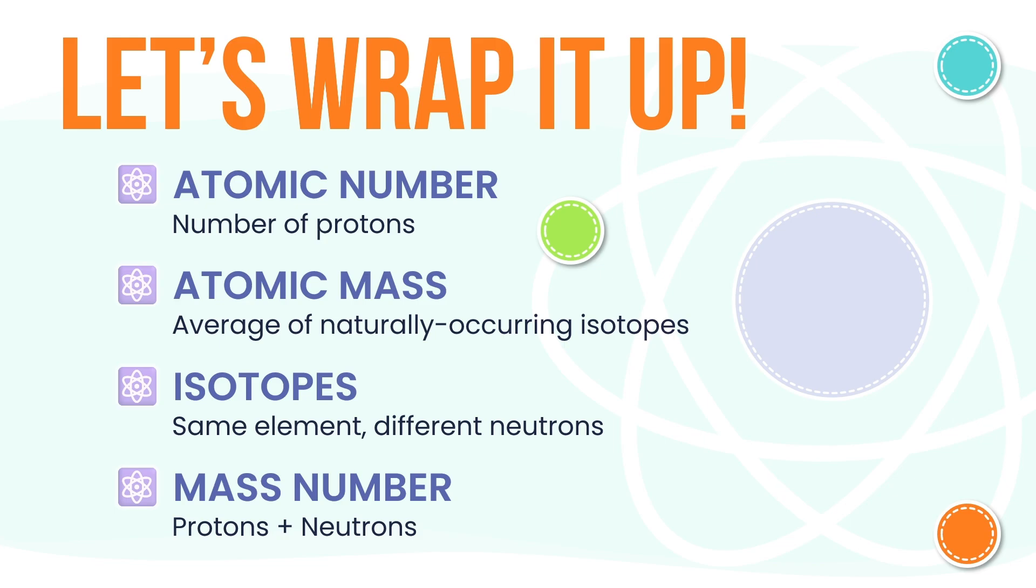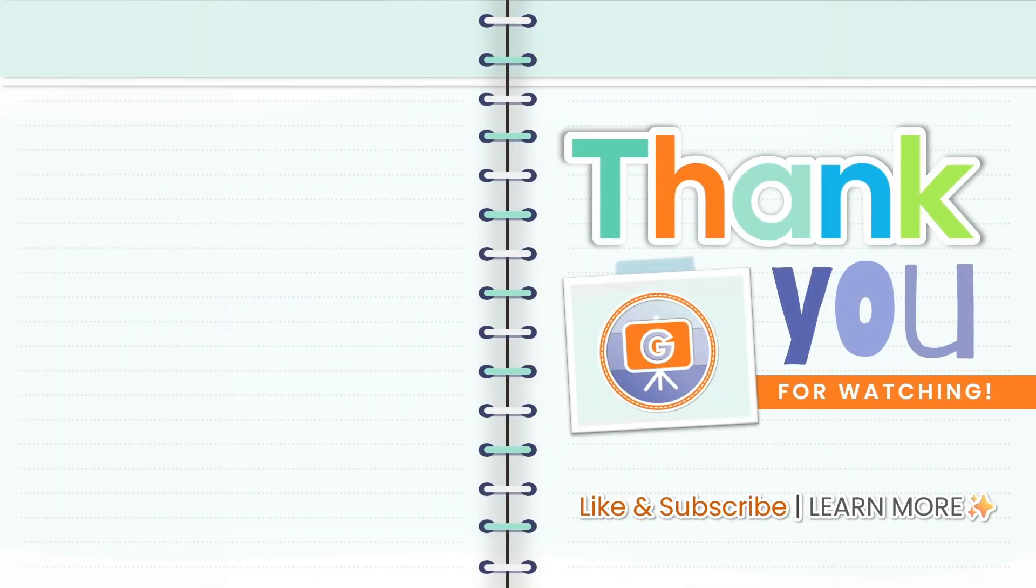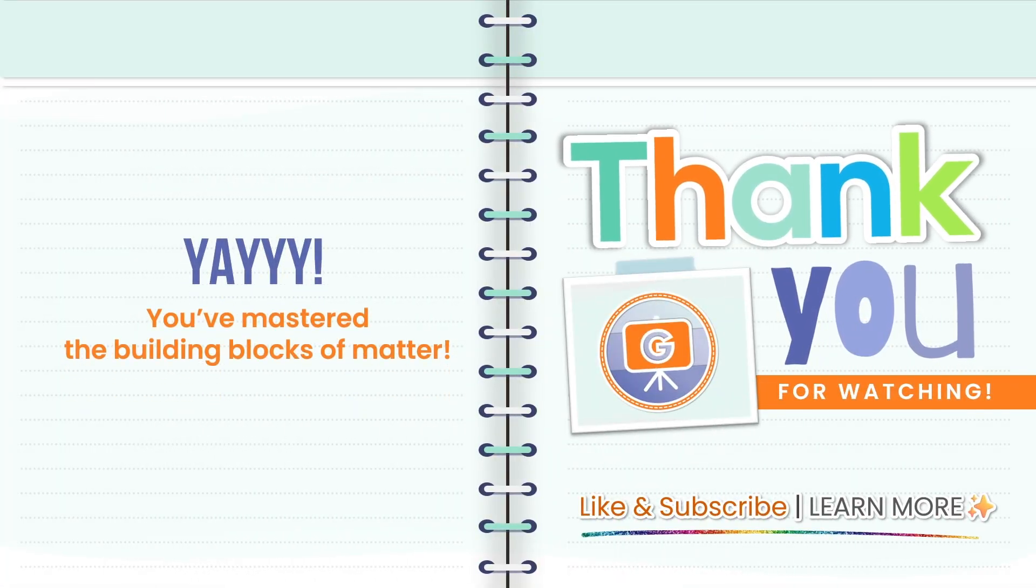And that's it. You've just wrapped up a huge part of the chemistry journey. From element tiles to isotopes, you've learned how to read the tiniest details in an atom. And that's no small thing. But don't hang up just yet. There's a whole new world waiting to be explored. We're heading from atoms to something a little bigger. See you in the next lesson. And yes, it's going to be a yay moment right here on Learning with G.